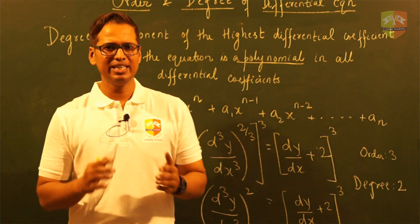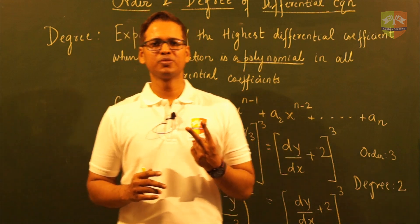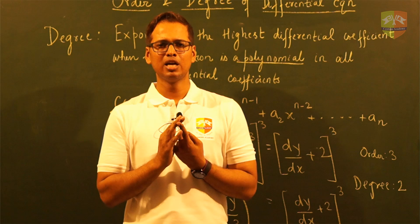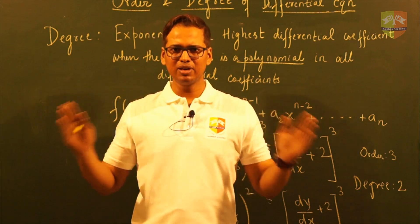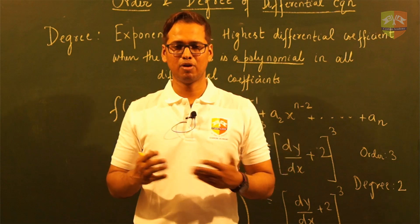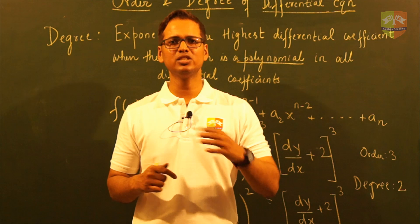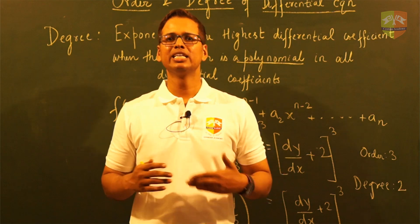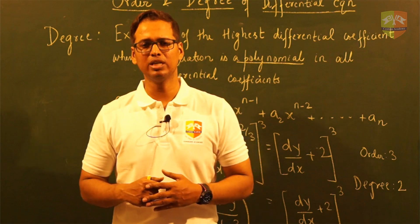So while finding the degree, two things you must keep in account: what is the exponent of the highest order, and you must convert that differential equation into polynomial form in all the differential coefficients. If it is not possible to convert, degree cannot be found out — we say degree does not exist for that particular differential equation.